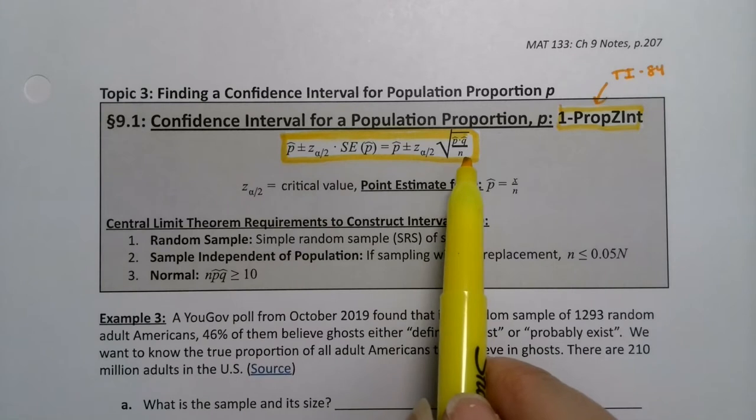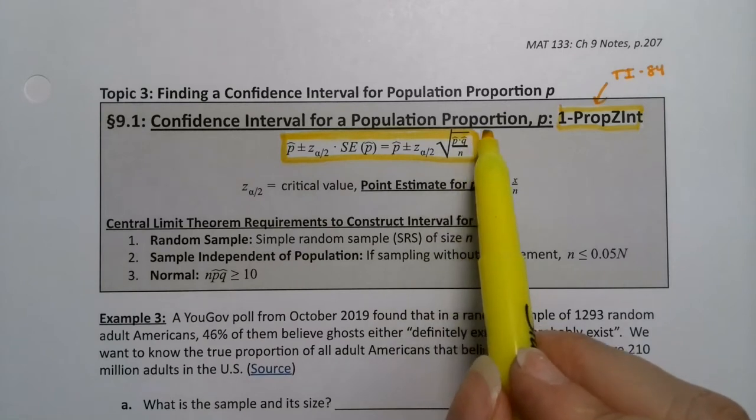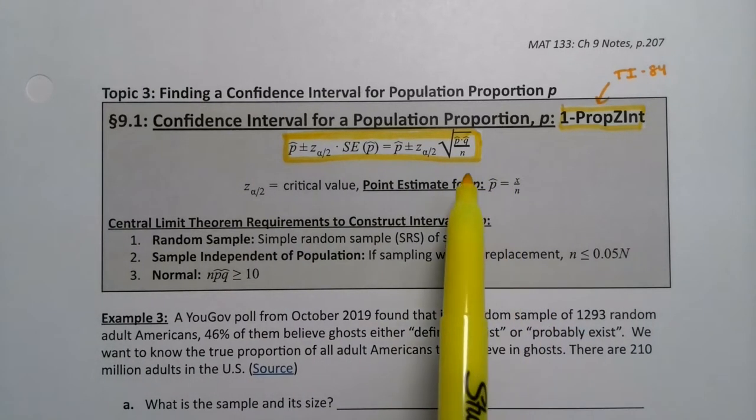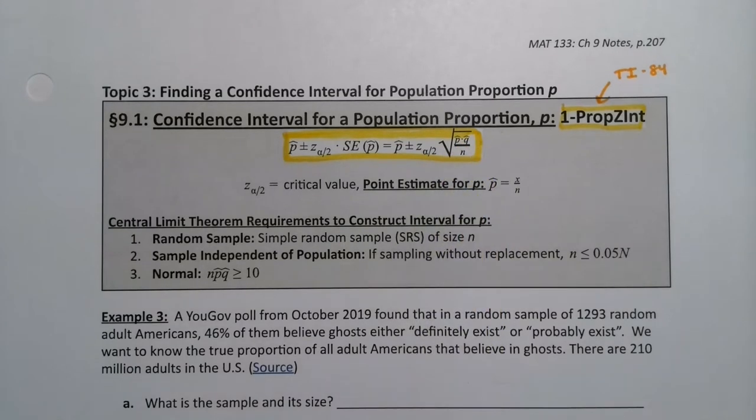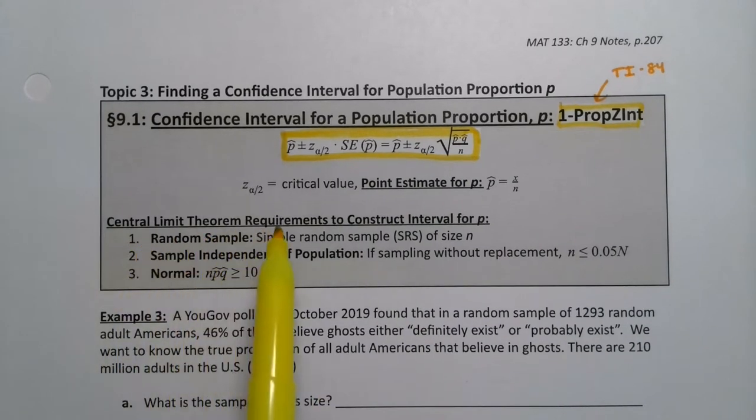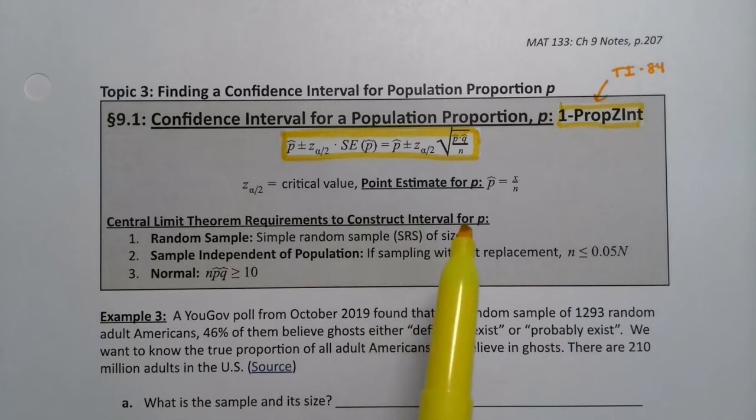We learned in section 8.2 that the standard error for P hat is the square root of P hat times Q hat over N. Of course, all of that is only true if we have the central limit theorem requirements met to construct that interval for P.